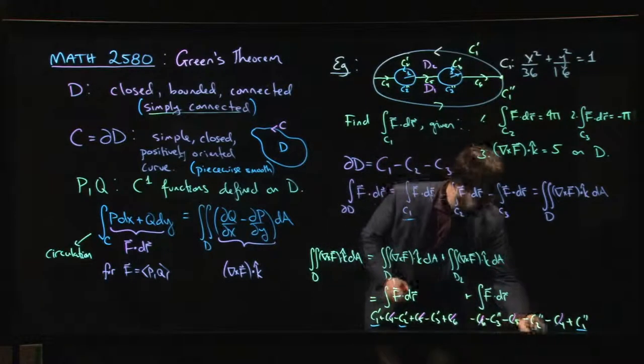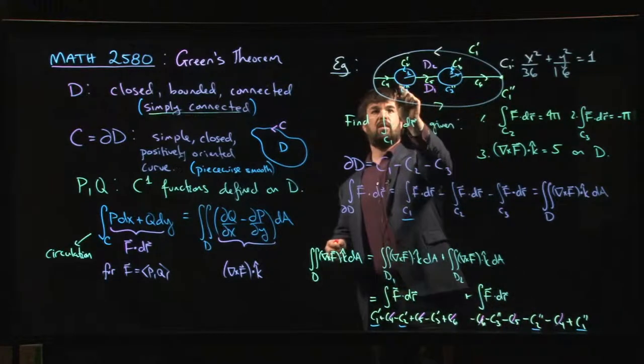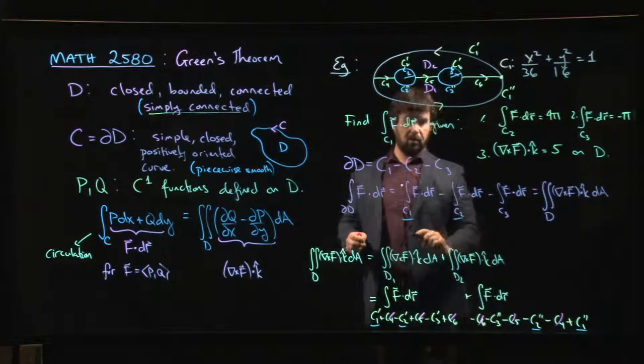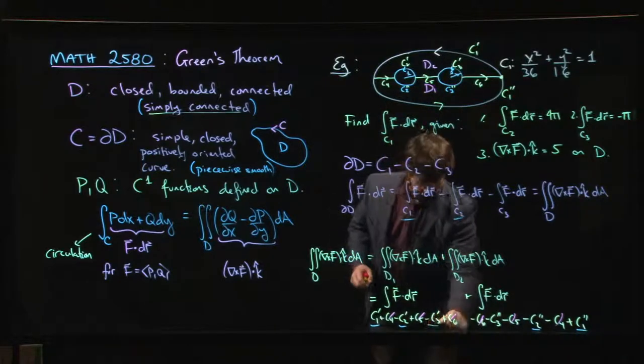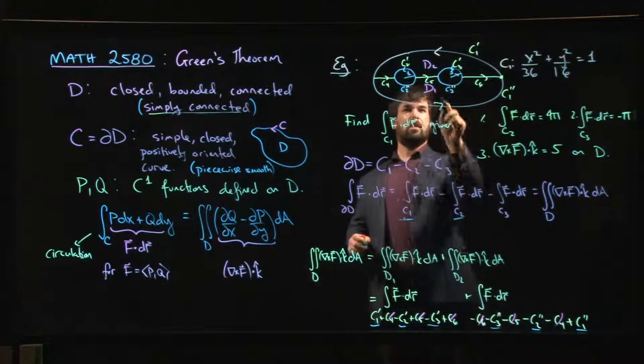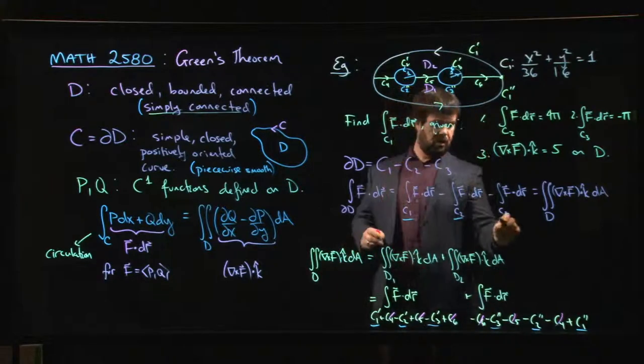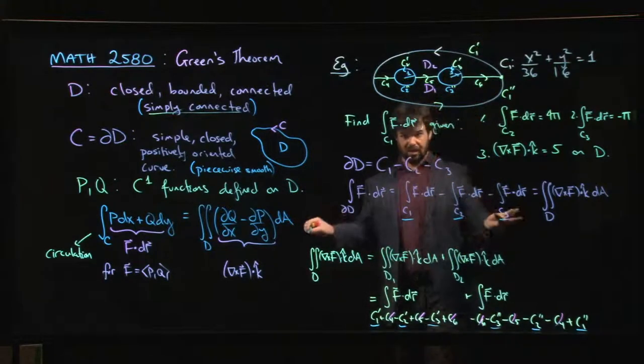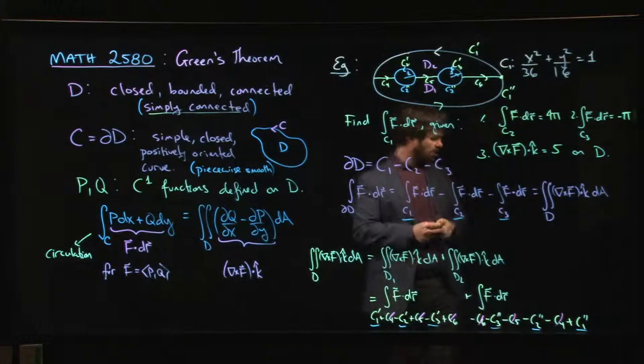Minus C2 prime minus C2 double prime, join those, gets me C2. Minus C3 prime minus C3 double prime, joining those, gets me C3. So it still works out. Excellent.